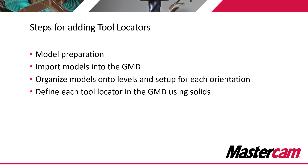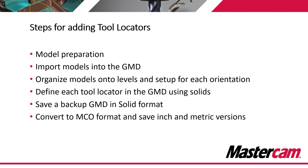The next step is to define each of the tool locators in the GMD file utilizing the solids that we've imported and organized. After that, we're going to save the GMD file in a solid format. This gives us the ability to go back to that solid version and make any changes we might need — such as modifying the solids further or moving around some of the attachment points. We always keep a solid version of the GMD so we can select specific features on the part, since the MCO format does not allow that.